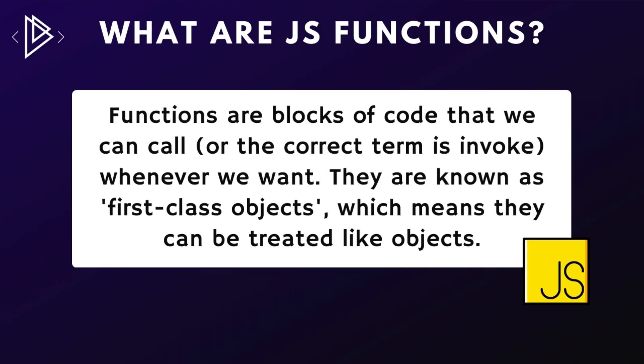The first thing to note about functions is that they are first-class objects. This basically means that they coexist with and can be treated like any other JavaScript object. They can be referenced by variables, declared with literals, etc. So that's what functions are — they are blocks of code that we can call or invoke whenever we need them.